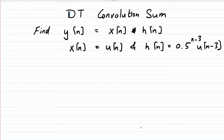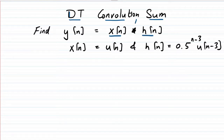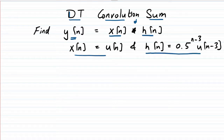This video gives an example of discrete time convolution sum. We have an input x(n) in discrete time, and an impulse response h(n). The convolution of these two yields the output y(n). Here we are given x(n) = u(n) and h(n) = 0.5^(n-3) * u(n-3).